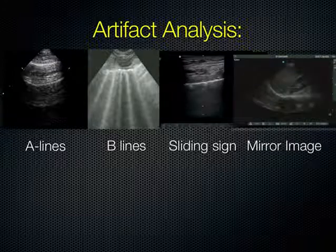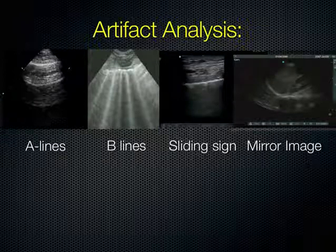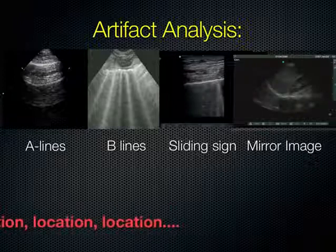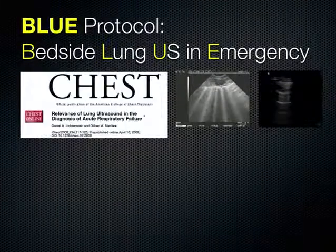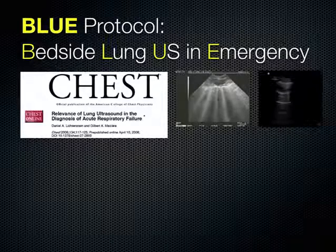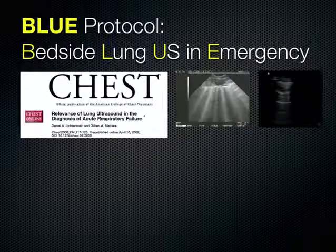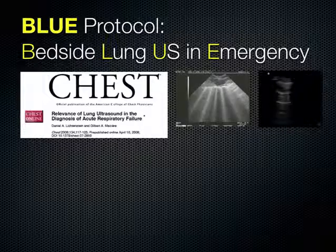Going back to artifact analysis — A lines, B lines, sliding sign, and mirror images — when we follow these throughout the lung examination we can extrapolate what may be going on underneath. What's really important is where these artifacts are located, because it will tell you a lot about the underlying pathology. Daniel Lichtenstein of France is one of the key fathers of pulmonary ultrasound in critical care. He developed the BLUE protocol to diagnose causes of acute respiratory failure by taking patients with a diagnosis of acute respiratory failure and scanning their chest alongside usual diagnostic tests including chest x-rays and CTs.